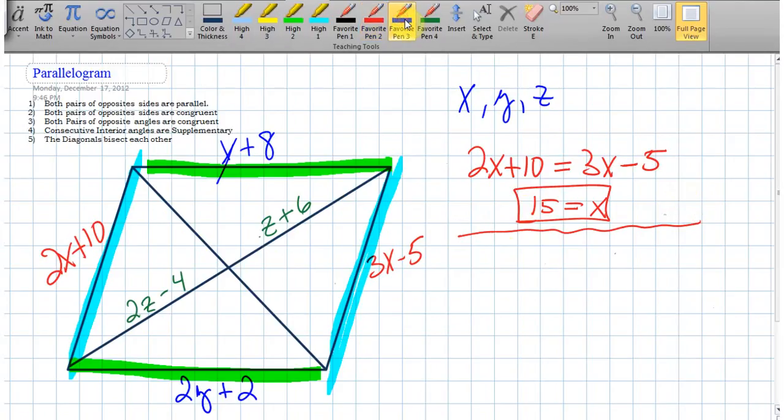What else do we know? Well, y plus 8 is going to be equal to 2y plus 2. And if we solve for y, y turns out to be 6.